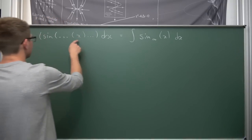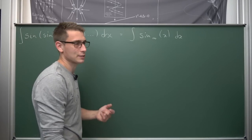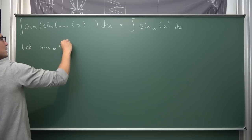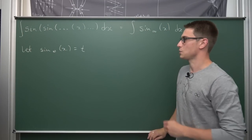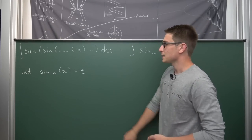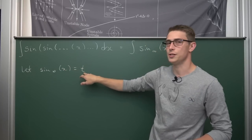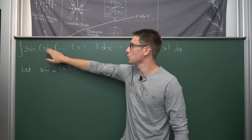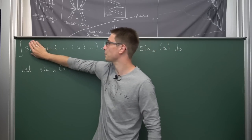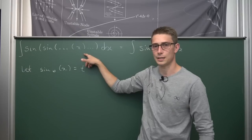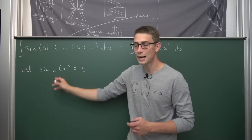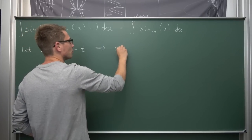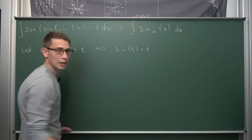We are going to let our function equal some other function of x — let's call it t. So let sine-infinity of x be equal to t. Now notice: since our infinite recursion of sines equals t, if I cover up the first sine, we still have an infinite recursion of sines inside the parentheses — which is still t. Meaning sine-infinity of x equals t also implies that sine of t equals t.